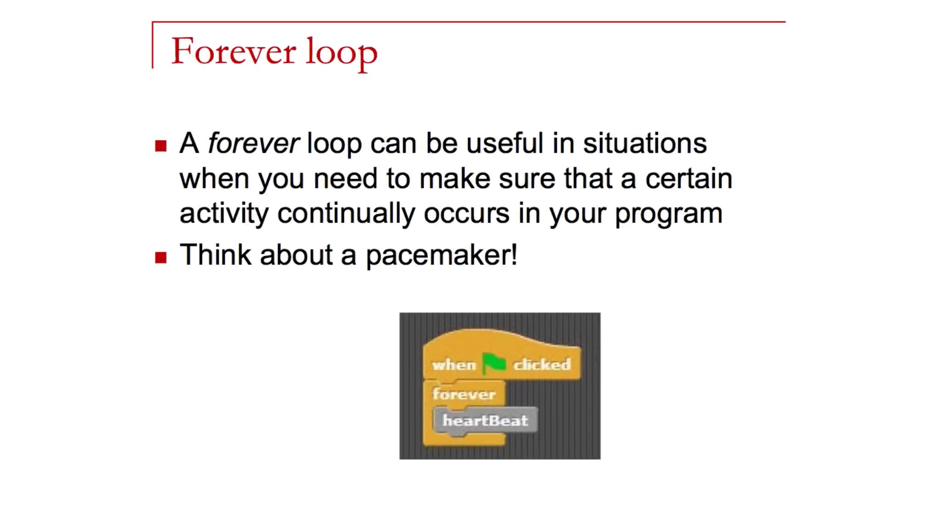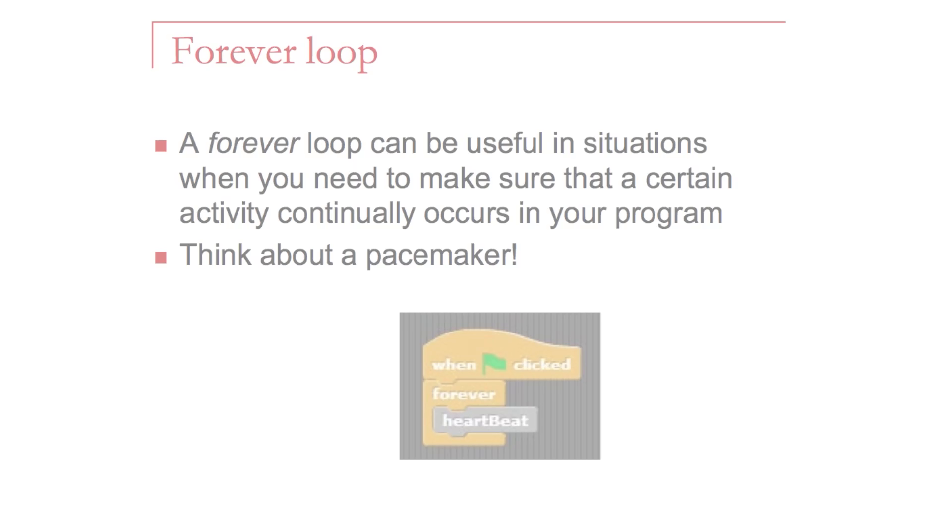The forever loop is an example of an infinite loop. Often, in some cases, an infinite loop suggests there's a bug or a problem with your program, but sometimes it's frequently the case where you actually want that to happen. So you want a certain process within your program to continually go on forever. A really good example would be that of a pacemaker. Obviously, if you have software that's driving a pacemaker, you want your heart to continue to beat. So a forever loop in that case would make a lot of sense.